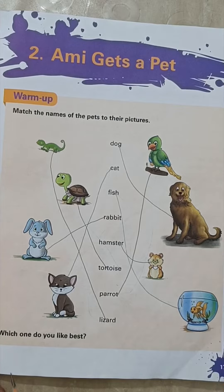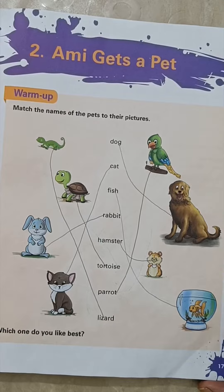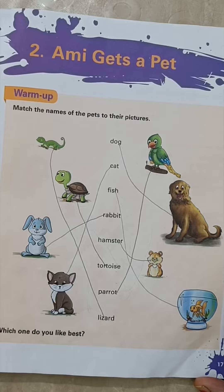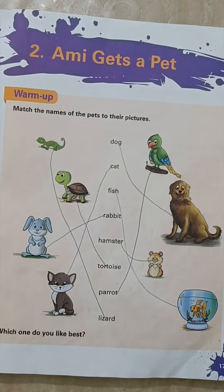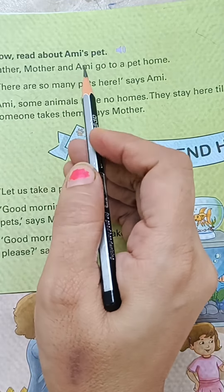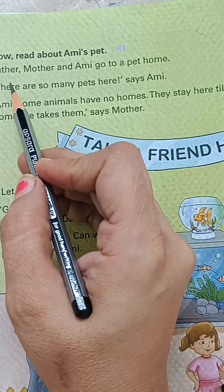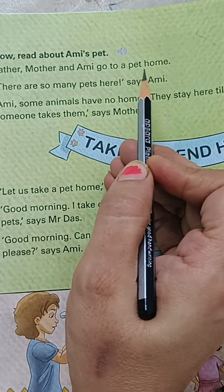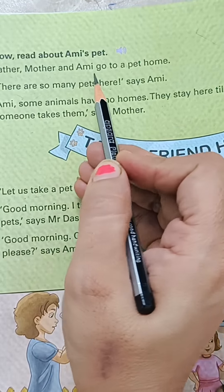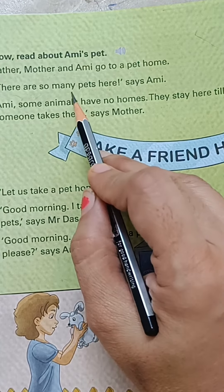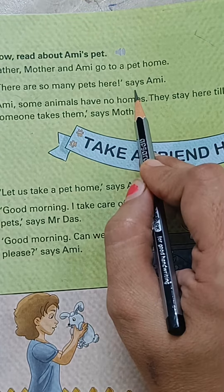Tell me which one do you like the best — aapko kaunsa pet sabse achha lagta hai? Now we will start our chapter. Read about Amy's pet. Father, Mother, and Amy go to a pet home. There are so many pets here, says Amy.